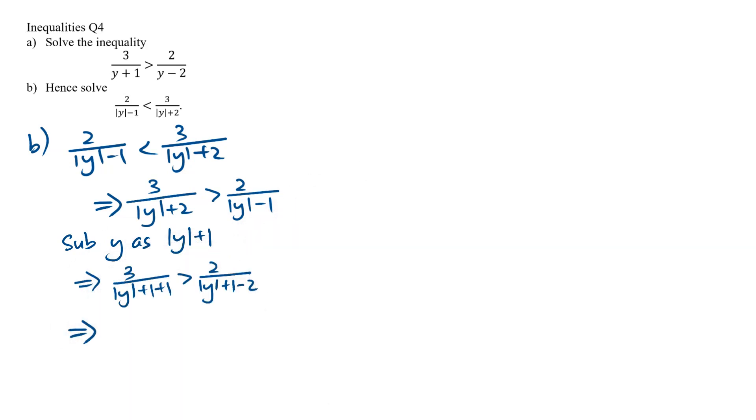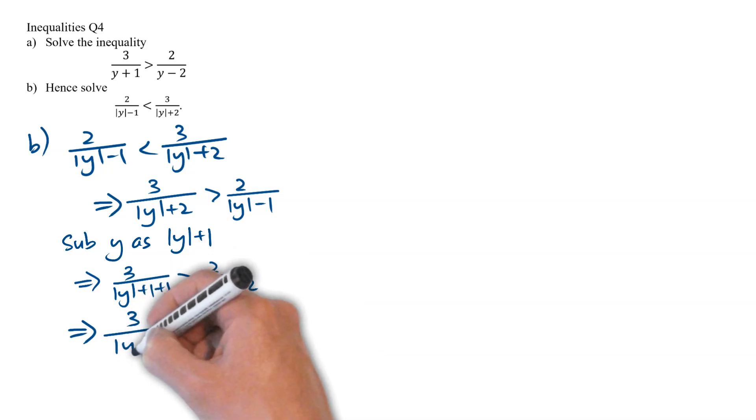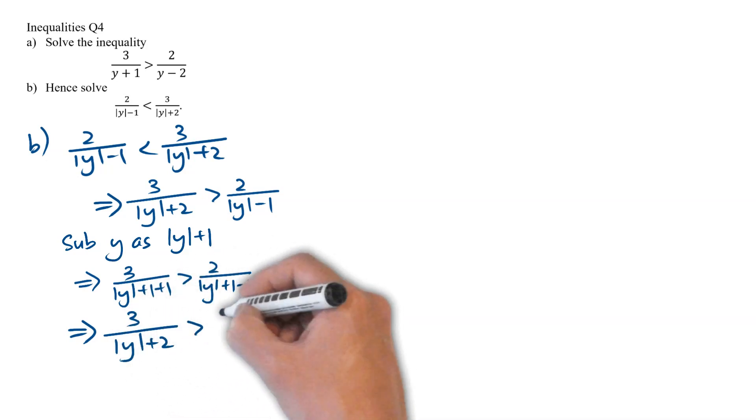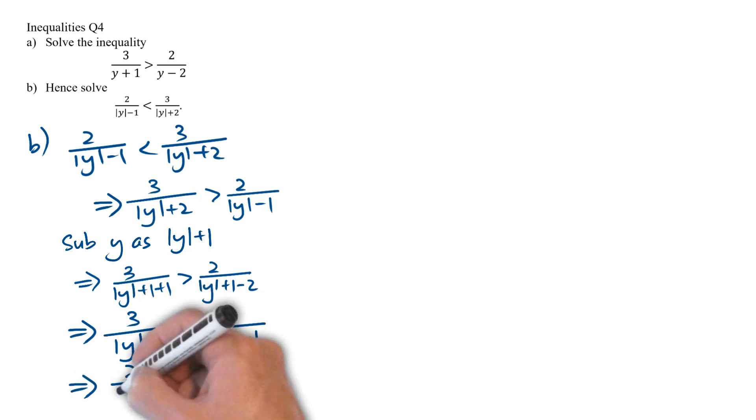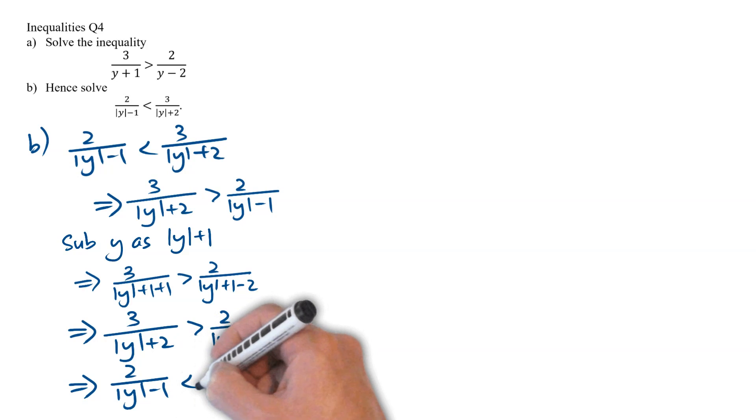And we can simplify this to 3 over mod y plus 2, greater than 2 over mod y minus 1. Now, if we swap the 2 terms around, we will end up with 2 over mod y minus 1, less than 3 over mod y plus 2, which is the inequality that we are asked to solve in part B.